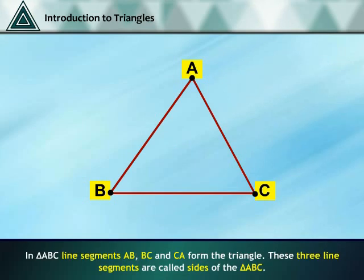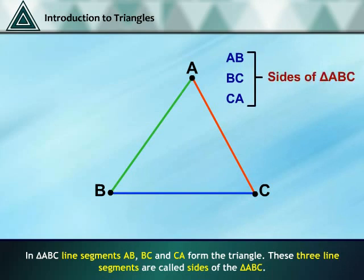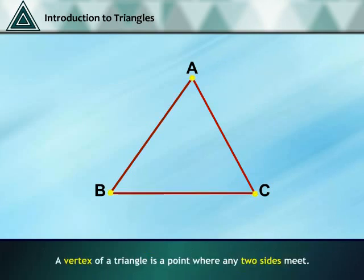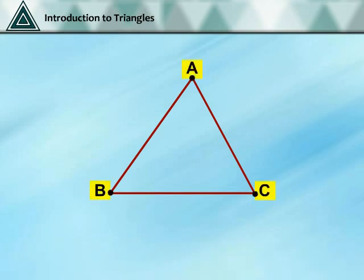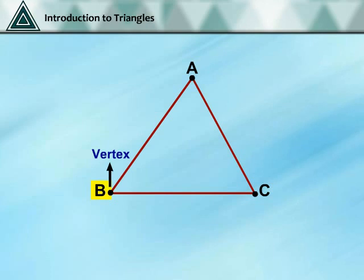In triangle ABC, line segments AB, BC and CA form the triangle. These three line segments are called sides of triangle ABC. A vertex of a triangle is a point where any two sides meet. The sides AB and AC meet at point A, so A is a vertex. Vertex B is where sides BC and AB meet, and vertex C is where sides AC and BC meet.